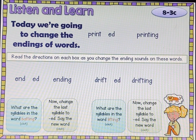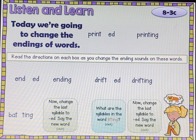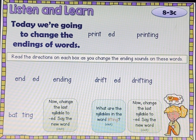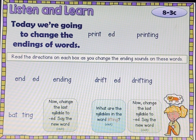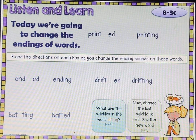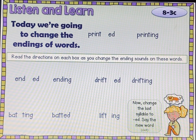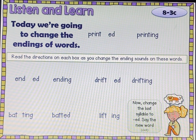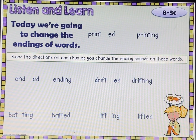What are the syllables in the word 'batting'? Check, pause, play. 'Bat' and then 'ting.' If there's a double consonant, we divide it between the two consonants. Now change the last syllable to 'ed' and say the new word — 'batting' to 'batted,' like he batted at baseball practice. What are the syllables in the word 'lifting'? Lift-ing. Now change the last syllable to 'ed' and say the new word. Lift-ed. Lifted.